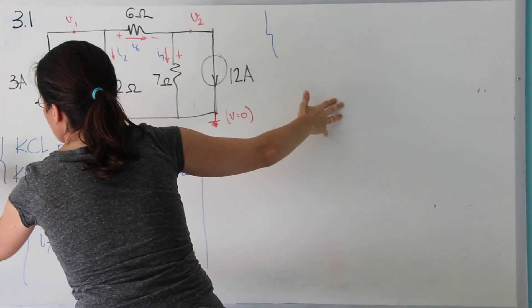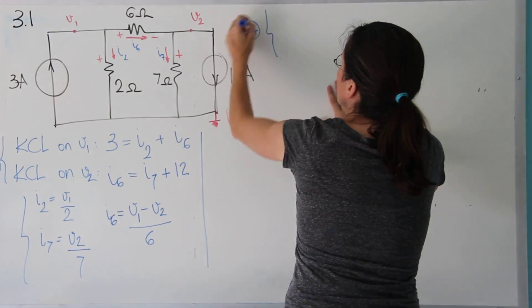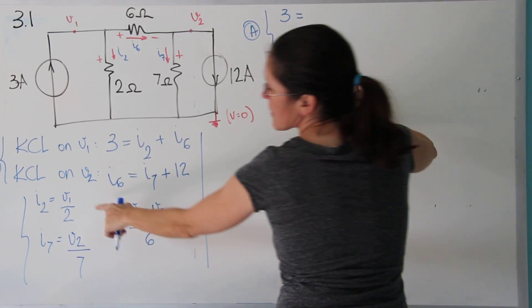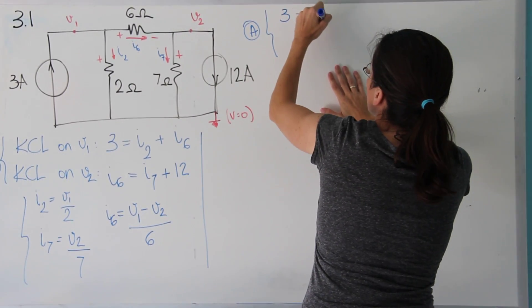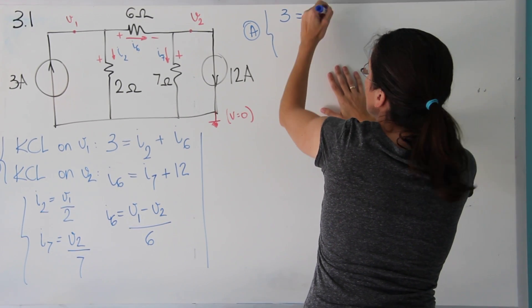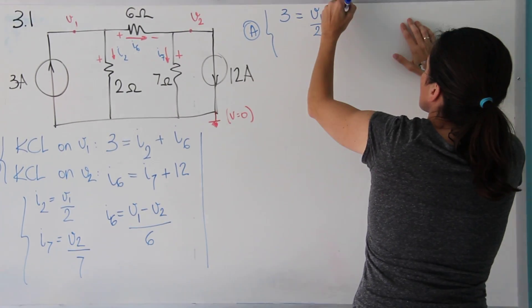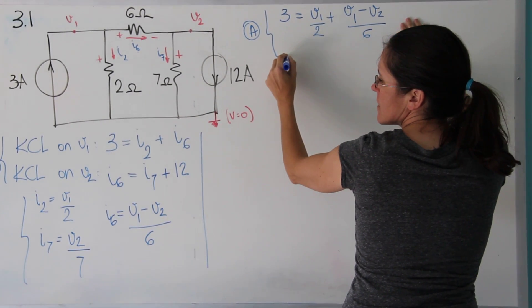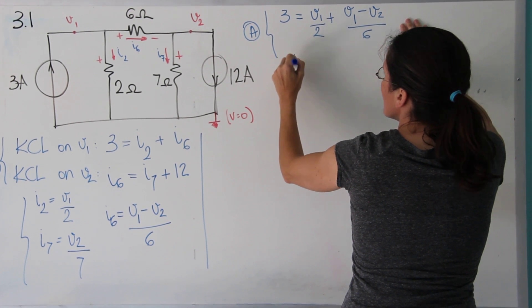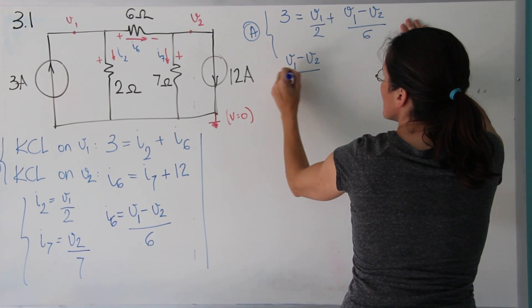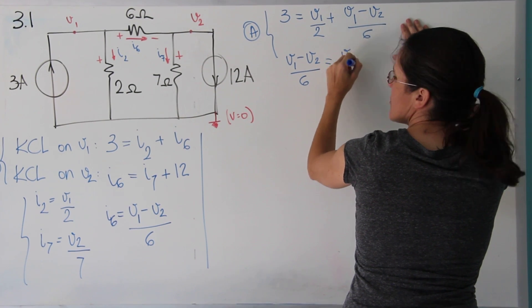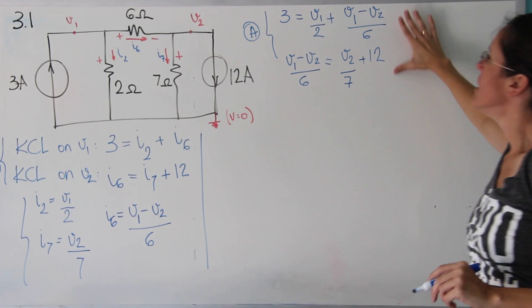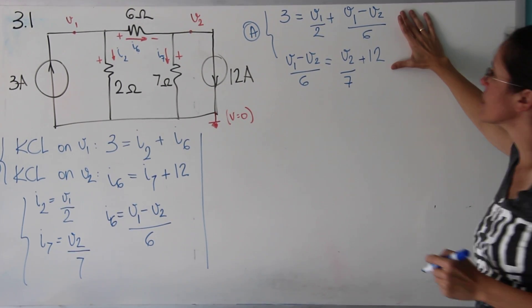3 equals V1 over 2, plus I6, which is V1 minus V2 over 6. And the other one is V1 minus V2 over 6 equals V2 over 7 plus 12. Now we just find V1 and V2 from these two equations.